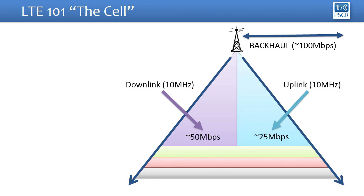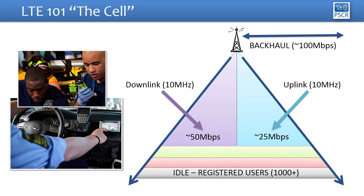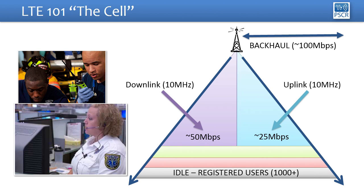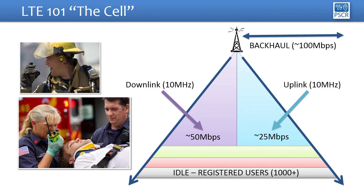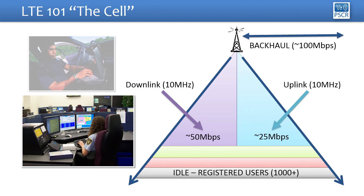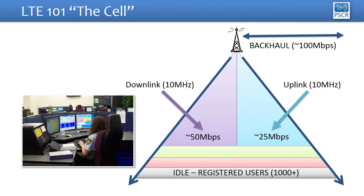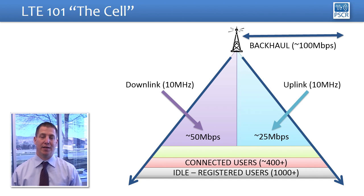The next set of critical resources relates to how many users can stay connected to the network. When you look at users rushing to an incident, a lot of times they're not using the network — their device is just turned on. You can have upwards of a thousand or more idle users coming into the coverage area of a cell. As those users begin to connect, the cell has an upper limit. Most cells support around 400 active users, possibly more depending on the vendor, the optimization, and the technology type. In general, 400 to 500 active connected users are about what you can expect.